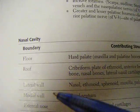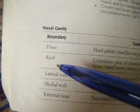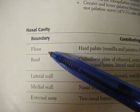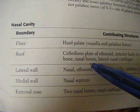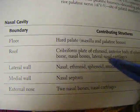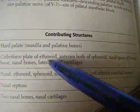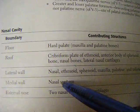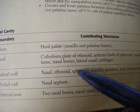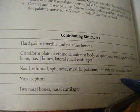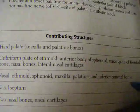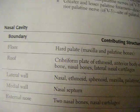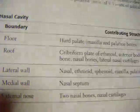The boundaries of the nasal cavity: the floor is formed by the hard palate. The roof is formed by the cribriform plate of the ethmoid bone, the nasal spine of the frontal bone, nasal bones, and lateral nasal cartilages. The lateral wall is formed by the nasal ethmoid, sphenoid, maxilla, palatine, and inferior conchae bones. The medial wall is formed by the nasal septum. The external nose is formed by two nasal bones and nasal cartilages.